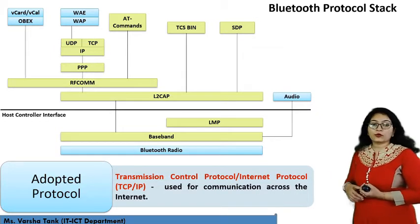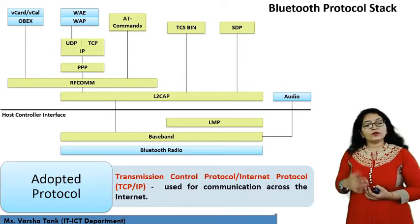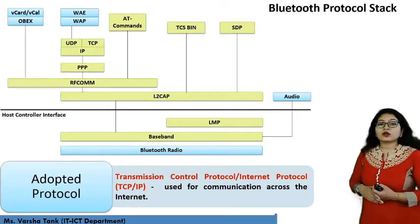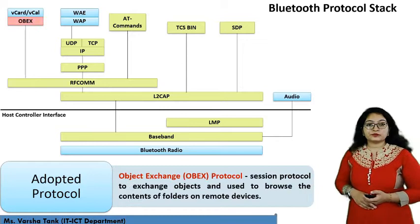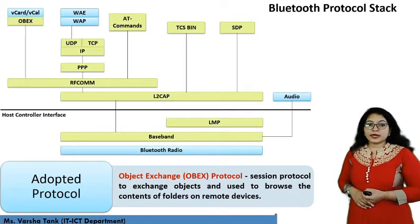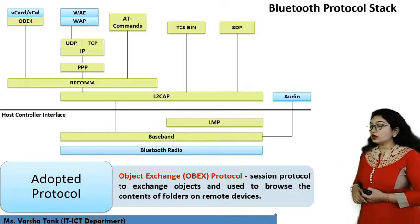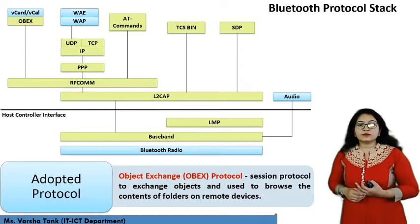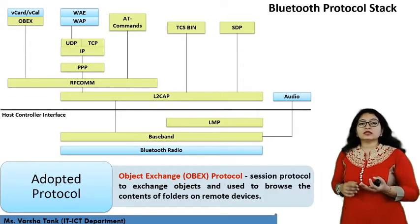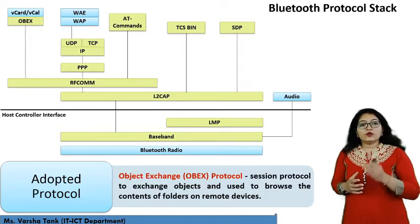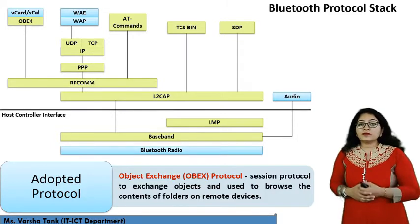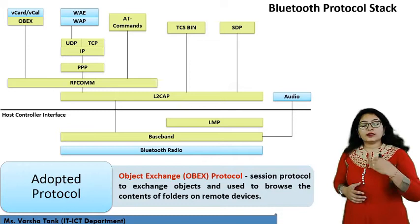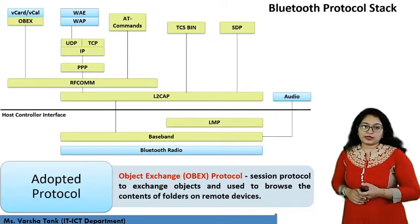In the Adopted Protocols category: PPP (Point-to-Point Protocol) takes IP packets to and from the point-to-point layer and places them onto the LAN. TCP (Transmission Control Protocol) is used for communication across the internet. OBEX, the Object Exchange Protocol, is a session protocol used to exchange objects and browse folder contents on remote devices.